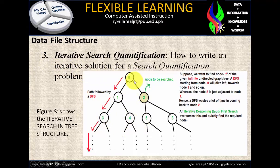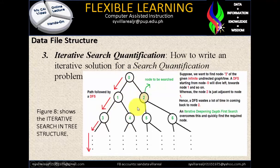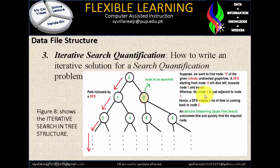In the tree structure, there is 0 going to 1 going to 3 because it's iterative — the path followed by DFS, data file structure. We have 0 going to 2, the node to be searched. Because this is a binary tree: 0, 1, 2; then 1, 3, 4; then 2, 5, 6. Suppose we want to find node 2 of the given infinite undirected graph tree. A DFS starting from node 0 will dive left toward node 1 and so on, whereas node 2 is just adjacent to node 1 — hence a DFS wastes a lot of time. An iterative deepening depth-first search overcomes this and quickly finds the required node.